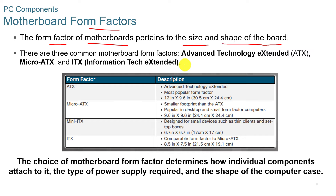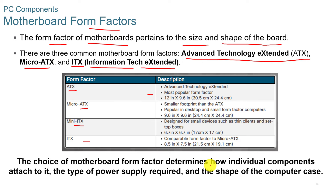Motherboard form factors pertain to the size and shape of the board. There are three common form factors: ATX — the most popular — micro ATX, which is a little bit smaller, and ITX (information technology extended), with mini ITX being even smaller. The choice of motherboard determines how individual components attach to it, the type of power supply required, and the shape of the computer case. Motherboards are built for specific chipsets, whether Intel or AMD, and everything — power supply, video card — is determined by what the motherboard requires.